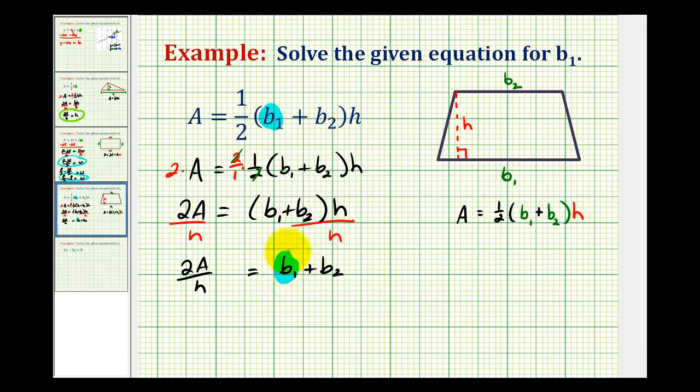Remember, we're trying to isolate B sub one. And we can do that by subtracting B sub two on both sides.